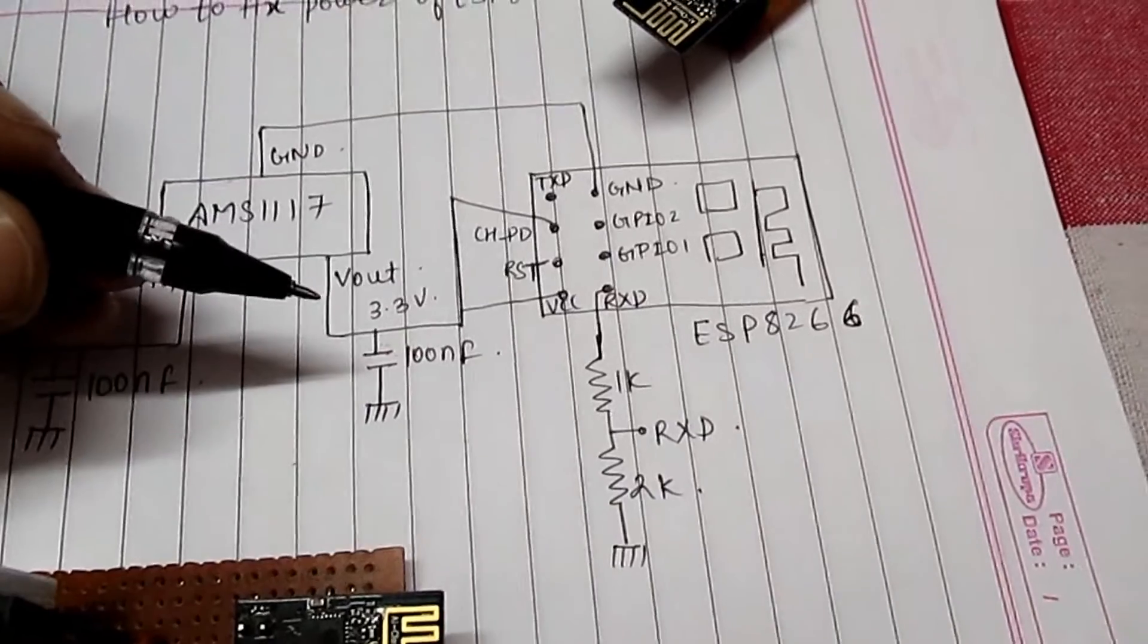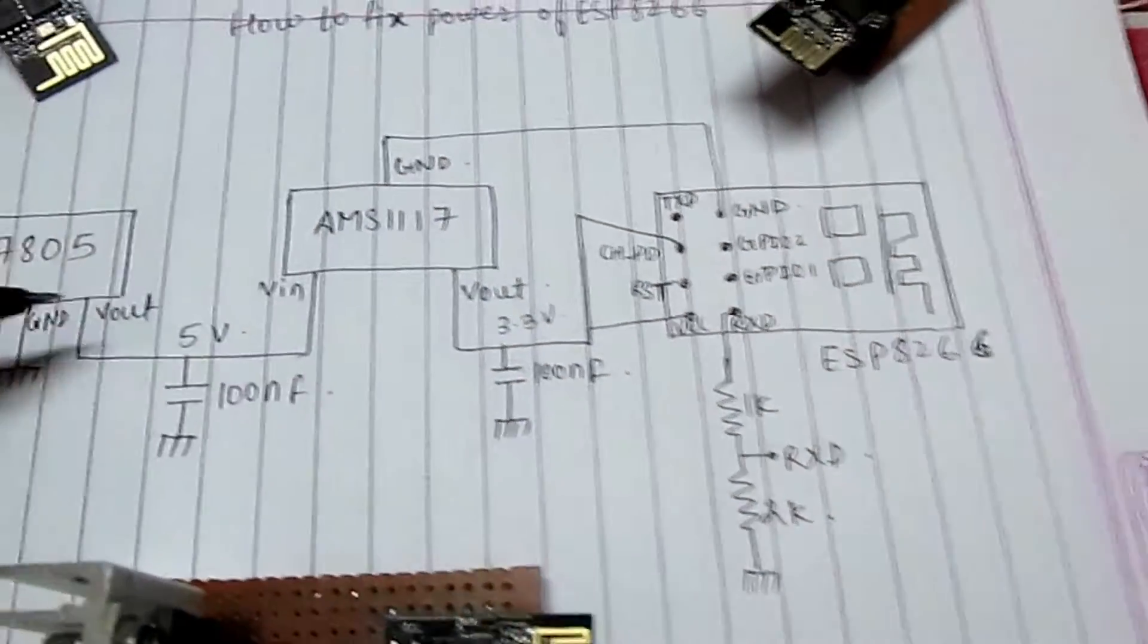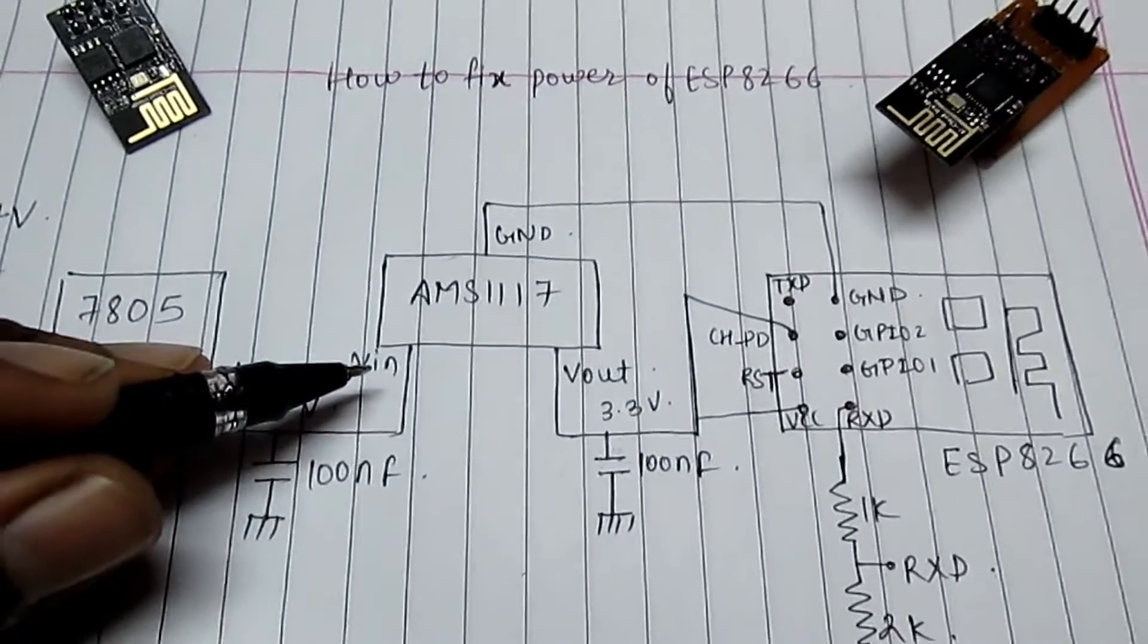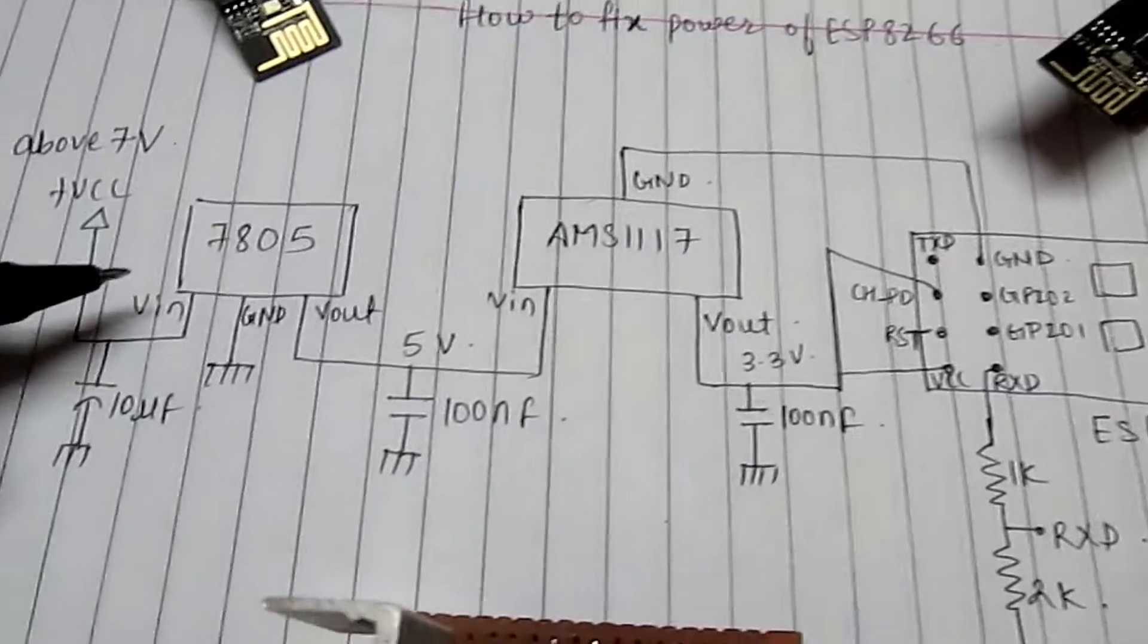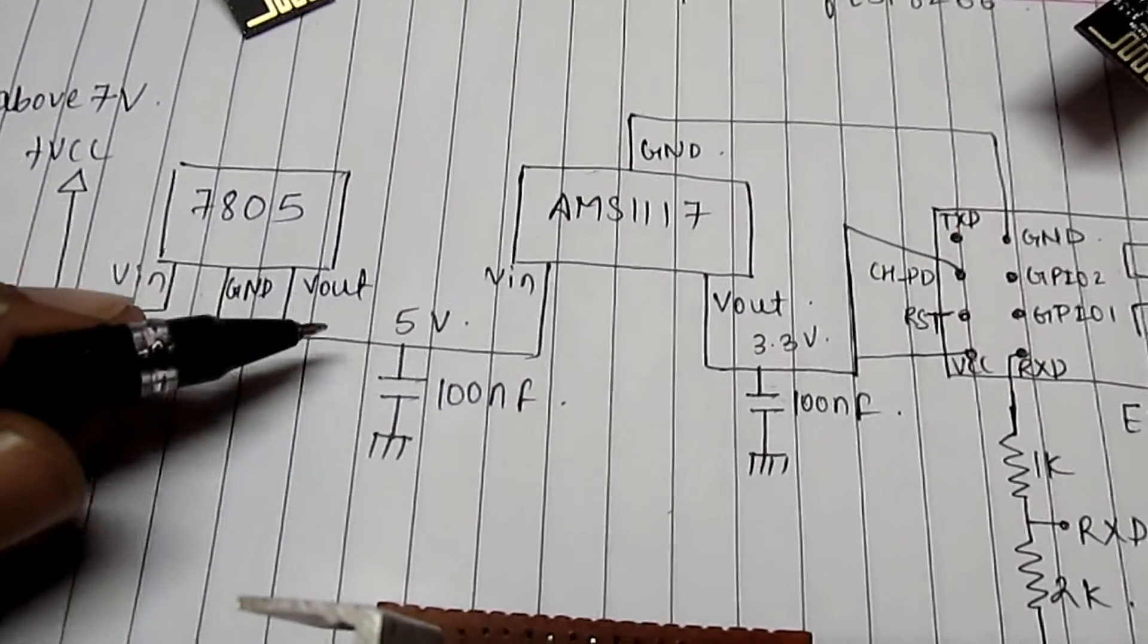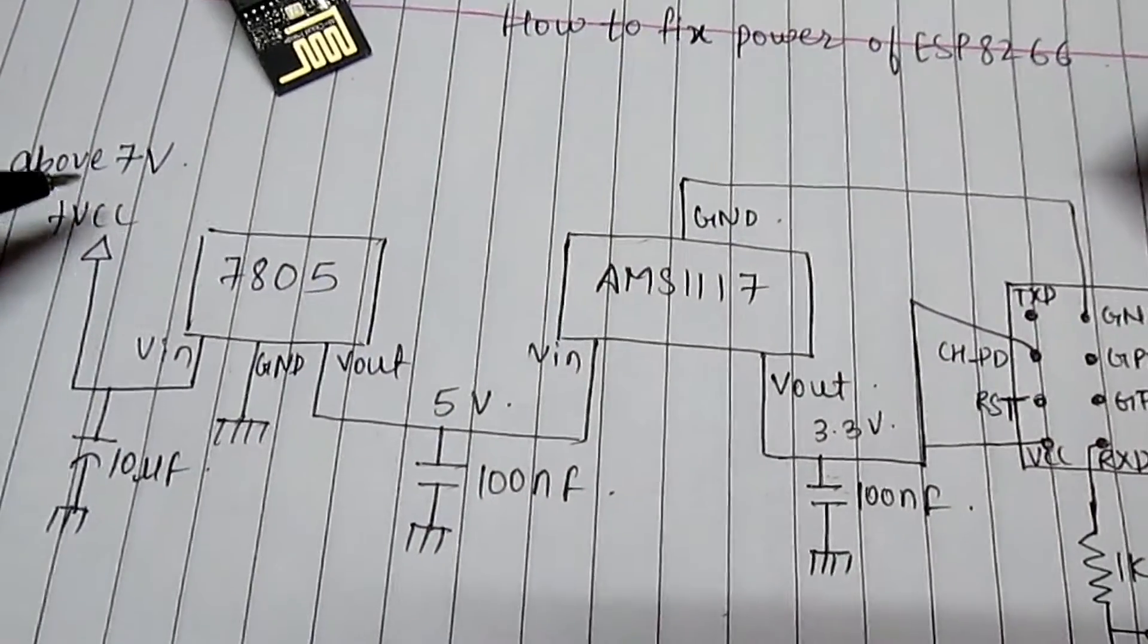You can connect 5 volts and 1 ampere current directly to the AMS117, or you can also connect 7805 to the AMS117. I use 12 volts and 1 ampere current.